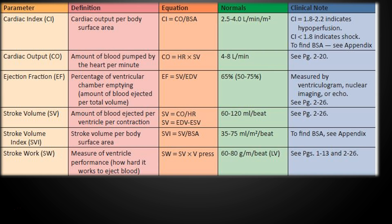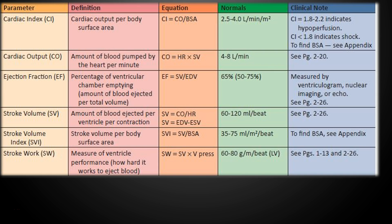Your cardiac monitors in the unit have the capability to calculate cardiac index — you just need to key in the height and weight and it'll convert your cardiac output into a cardiac index. A normal cardiac index for an adult is between 2.5 to 4.0 liters per minute per meter squared. Another important parameter is the ejection fraction, which is the percentage of ventricular chamber emptying — the amount of blood ejected per total volume. Ejection fraction is normally between 50 to 75 percent, with 65 percent being typically normal. Remember that when the left ventricle ejects blood, some blood is supposed to remain behind, and echocardiography is the most likely mechanism to determine ejection fraction.